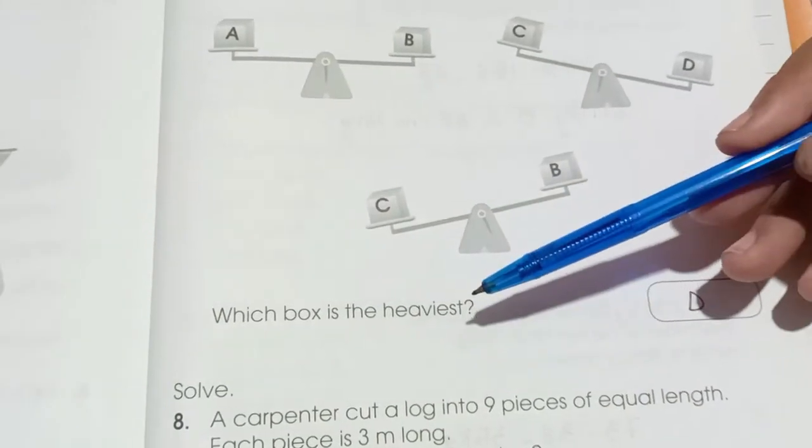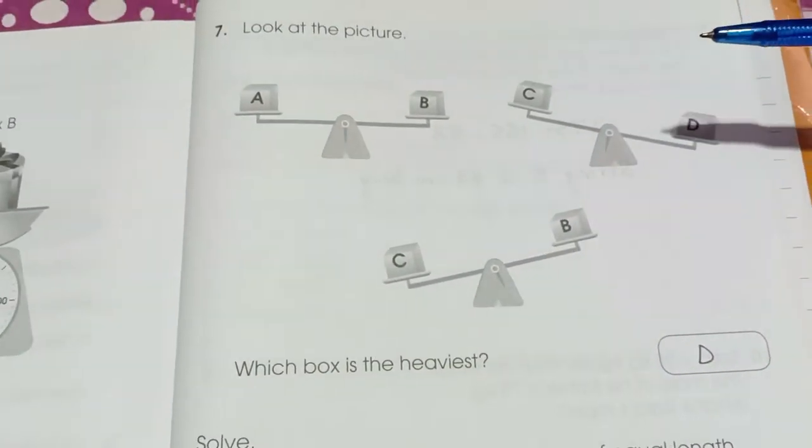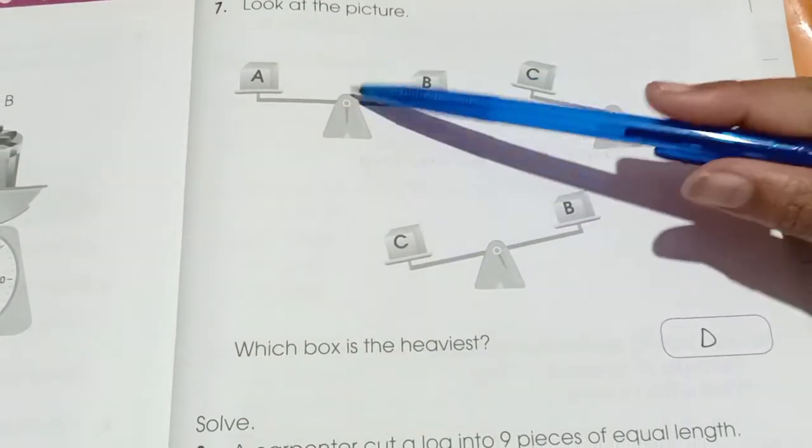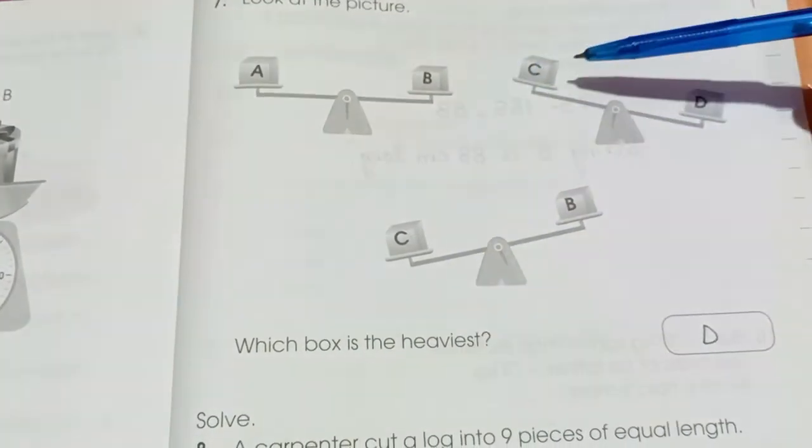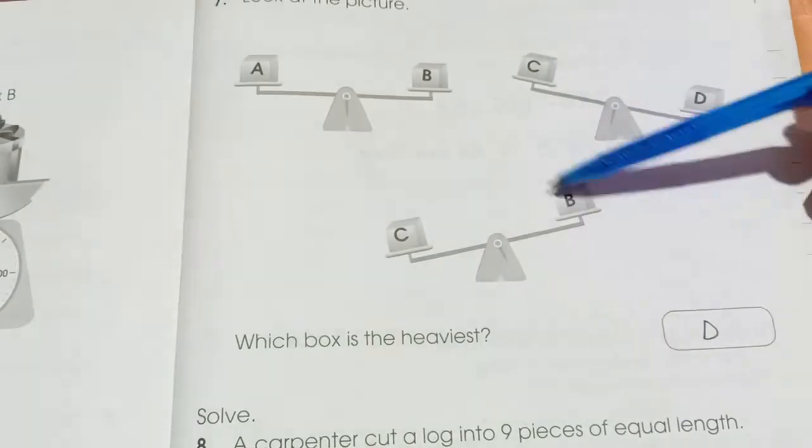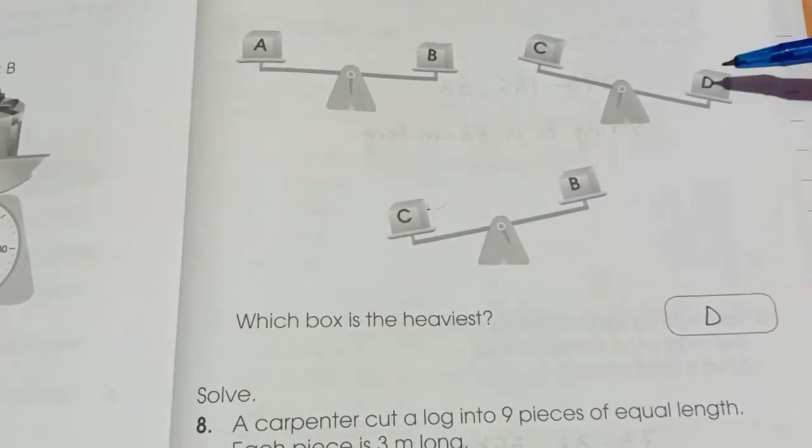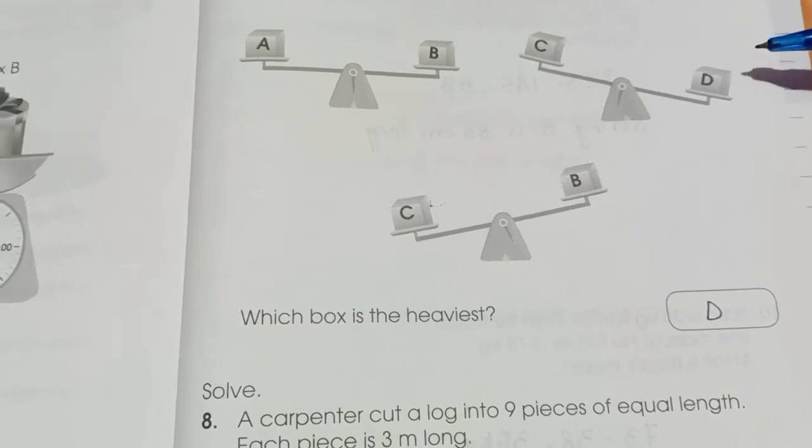Here we have which box is heaviest. So you can see A and B is almost equal. C and D, D is heavier. And C and B is here. So we can see that box D is heaviest.